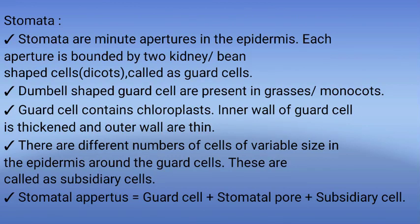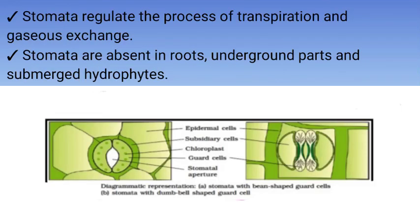When guard cells become turgid, they open and form a pore between them which is called the stomatal pore. Functions of stomata: stomata regulate the process of transpiration and gaseous exchange in plants. Stomata are absent in roots, underground parts, and submerged hydrophytes.